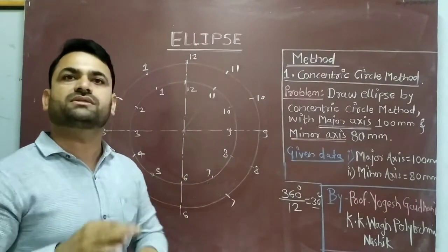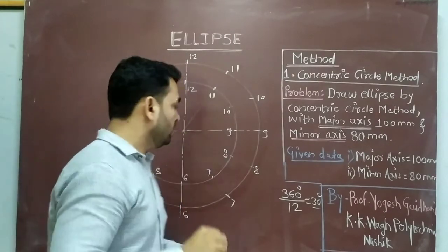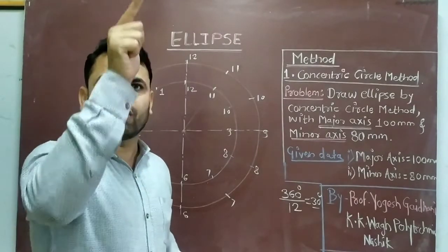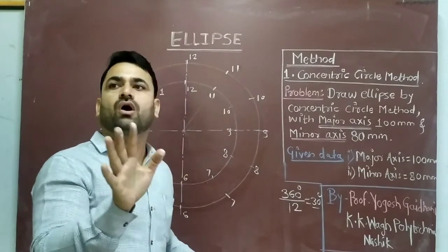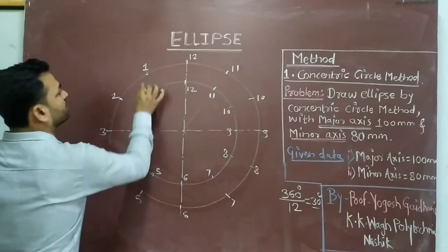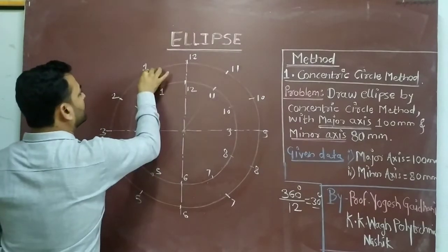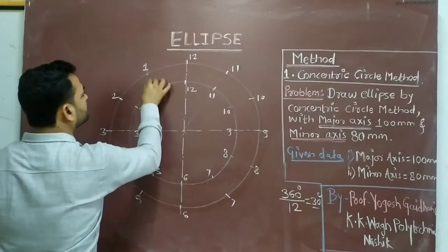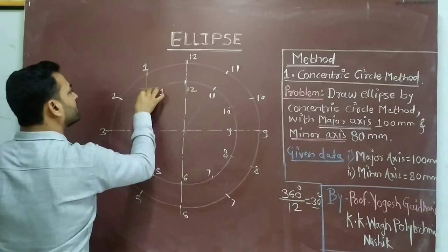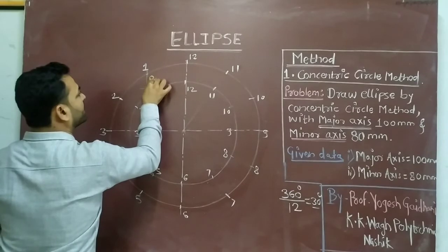Now we move towards step number 3, which is very important — how to draw the ellipse. Always keep in mind: from the outer circle you have to draw a vertical line, and from the inner circle you have to draw a horizontal line, from each and every point. Starting with point number 1: from point number 1 on the outer circle, draw one vertical line — it should be a thin line. Similarly, draw a horizontal line from point number 1 on the inner circle, and the point of intersection gives us point P1.